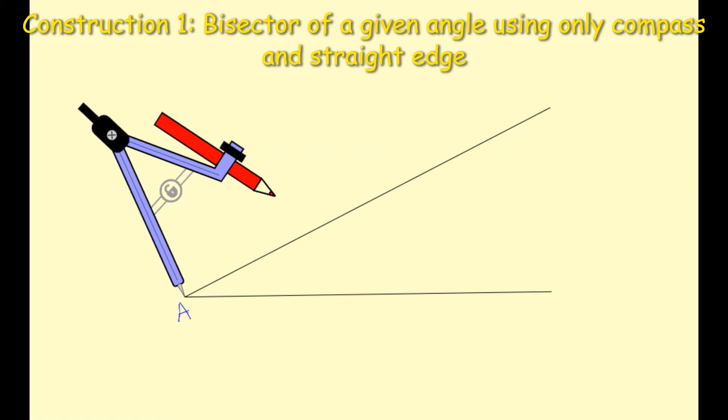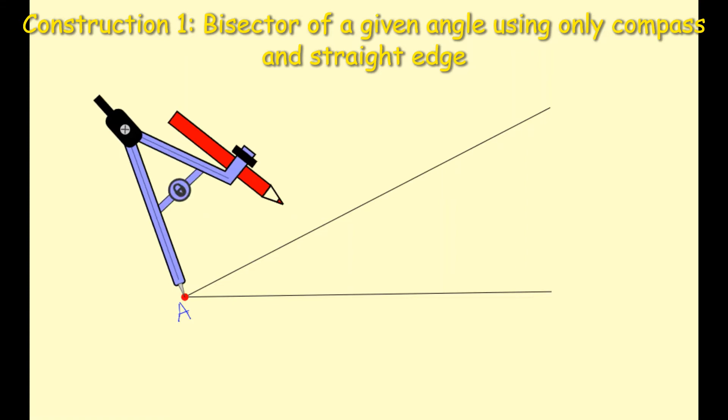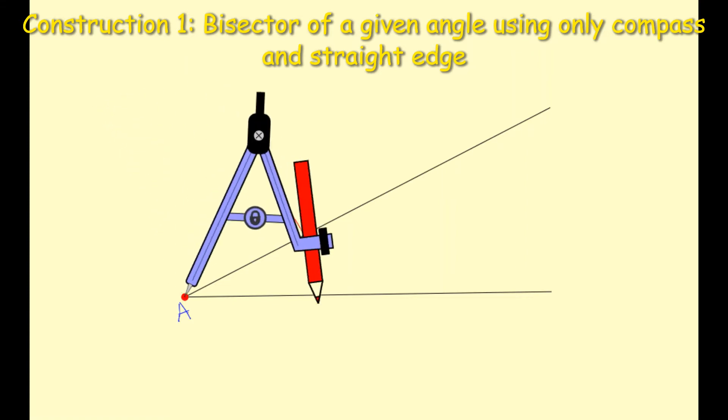And you just construct an arc. An arc is basically part of a circle which goes through those two line segments.